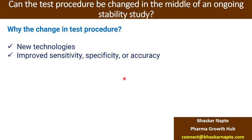The second reason is improved sensitivity, specificity, or accuracy. For example, you have an HPLC test procedure, but the current method is not sensitive enough or has specificity issues with respect to interference. Even though you have validated the current test procedure, the method's strength in terms of sensitivity, specificity, accuracy, or reproducibility is insufficient — this is a valid point to bring a change in the test procedure.